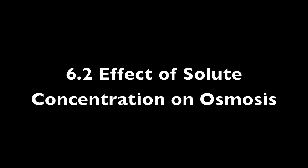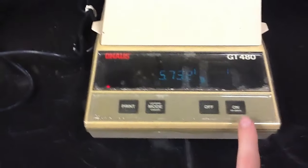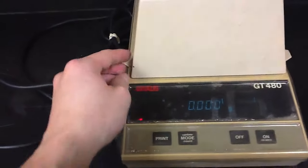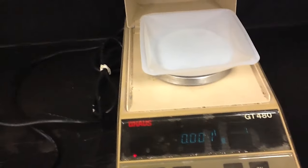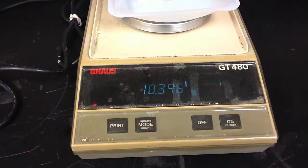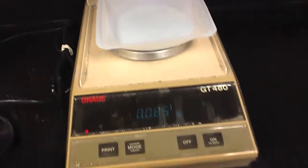The purpose of experiment 6.2 was to determine the effect of solute concentration on osmosis. At the end of this experiment, you will once again obtain the mass of your bag using the digital balance. Depending upon the solution in which you placed your bag, you should either see an increase, a decrease, or no change in the mass of your bag.